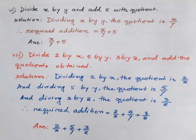Number 6: Divide x by y and add 5 with the quotient. We first divide x by y, then add 5 with that quotient. Solution: Dividing x by y, the quotient is x by y. Therefore, the required addition is x by y plus 5. Answer: x/y plus 5.